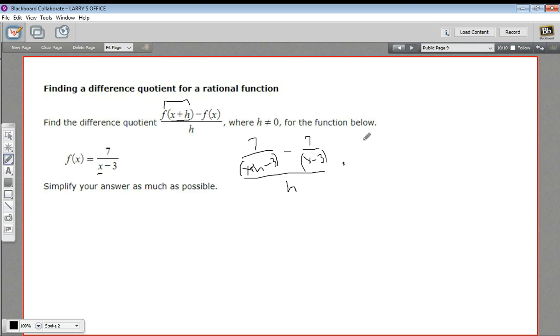So I'm going to multiply by x plus h minus 3 times x minus 3 over x plus h minus 3 times x minus 3.